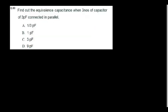Find the equivalent capacitance when three 3 F capacitors are connected in parallel. When capacitors are in parallel, CT = C1 + C2 + C3 = 3 + 3 + 3 = 9 F.